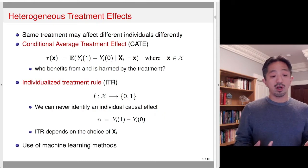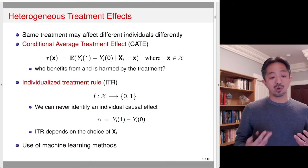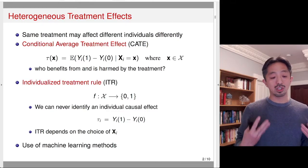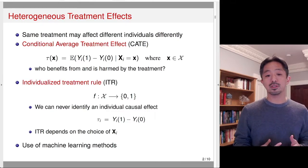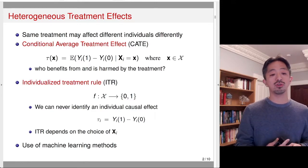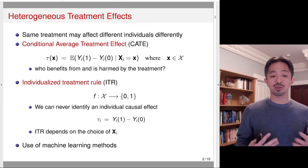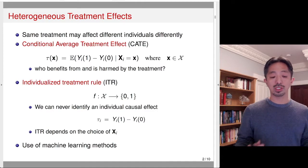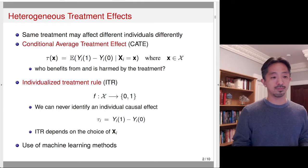In the current literature, there is increasing use of machine learning methods to figure out how to estimate the conditional average treatment effect and how to construct individual treatment rules. We'll discuss some of the use of machine learning methods in this lecture.